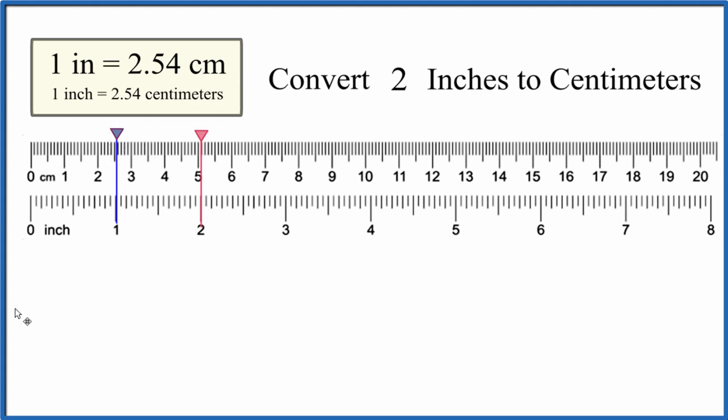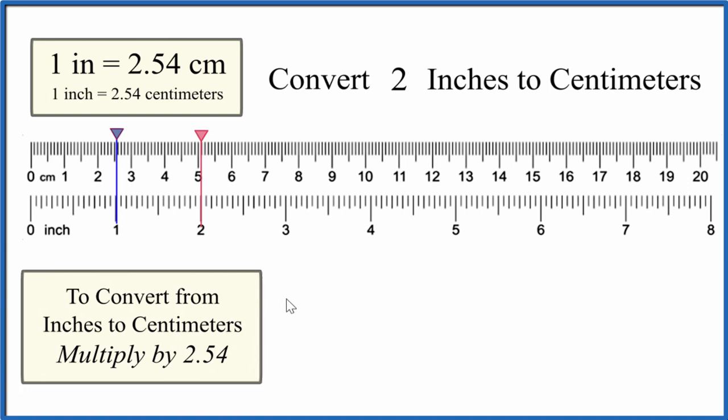And to convert from inches to centimeters very accurately, we just multiply the inches by 2.54. It's because one inch is 2.54 centimeters.